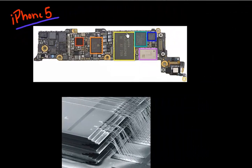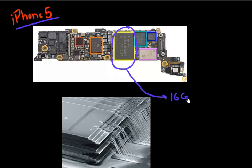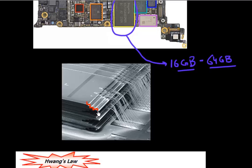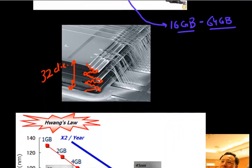In earlier teardown videos of the iPhone, we saw the flash memory chip, which can range anywhere from 16 gigabytes all the way up to 64 gigabytes of storage in your iPad — a single chip containing that much storage. But if you open apart that chip, it's not one single die; it's multiple dies stacked on top of each other — in this case, 32 of these dies stacked together.